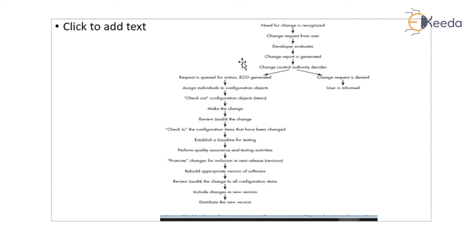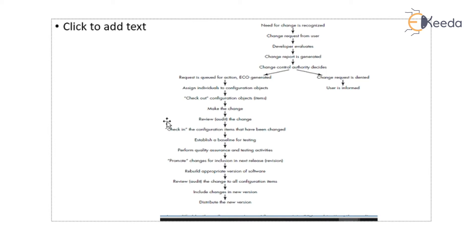But if the authority decides to incorporate the change, the request is queued for action. Individuals are assigned to configure objects, check out configuration objects, make the change, review the change, and check in the configuration items that have been changed. A baseline is established for testing, quality assurance and testing activities are performed, the change is promoted for inclusion in the next release, the appropriate version of the software is rebuilt, the change is reviewed across all configuration items, and the change is included in the new version and distributed to all stakeholders.